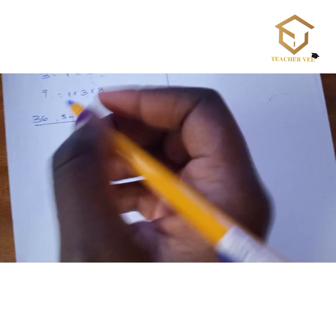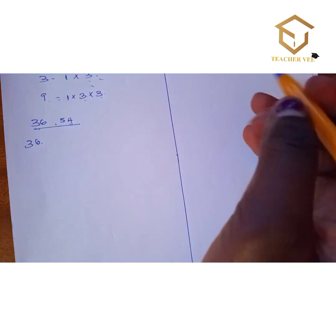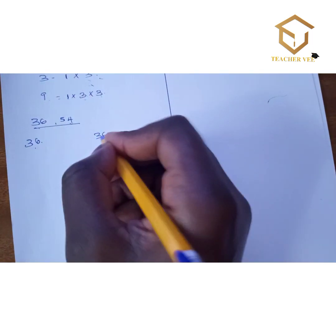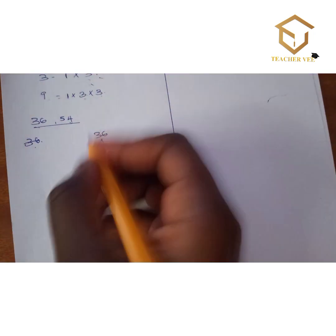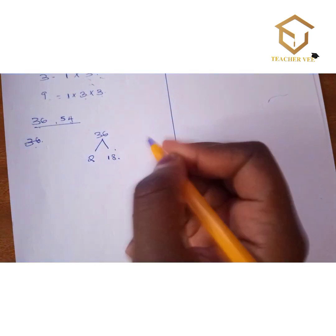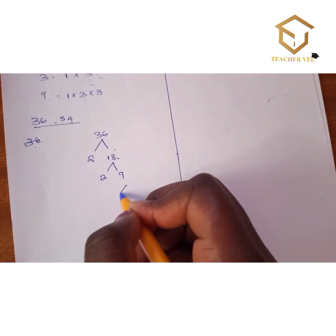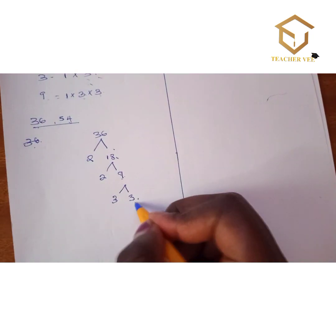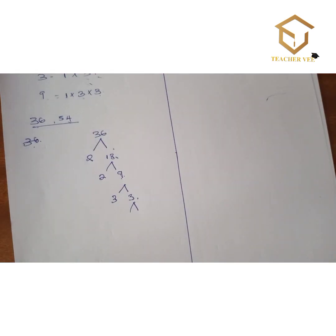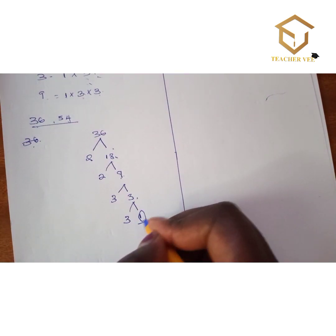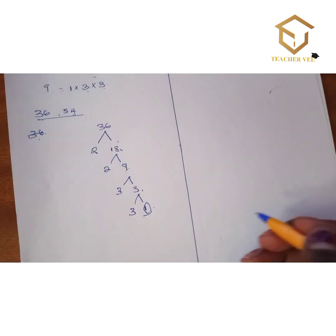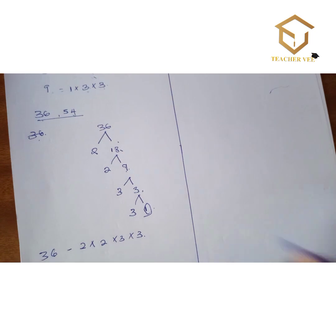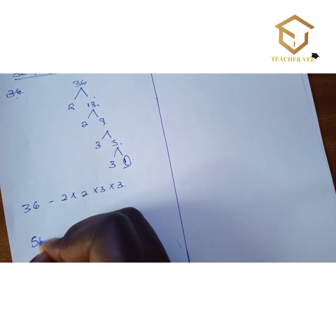For the prime factorization of 36, start with the smallest prime number, which is 2. Divide 36 by 2 to get 18; divide 18 by 2 to get 9. Since 9 is not divisible by 2, divide by 3 to get 3; divide by 3 again to get 1. So the prime factorization of 36 is 2 × 2 × 3 × 3.